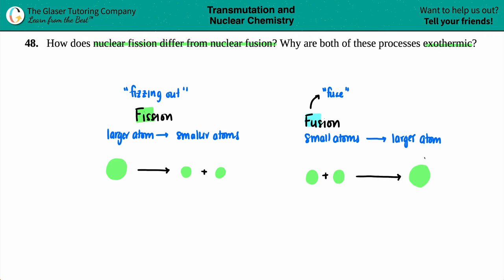Fission is when you have a larger atom that is split into two, producing two smaller atoms. Fusion is when you're taking two atoms and fusing them together, and now you get one larger atom. But now, why are both of these processes exothermic?